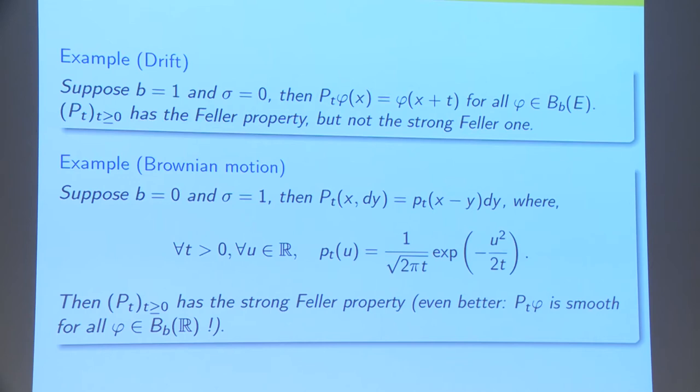Obviously, it's not Strong-Feller because it does not create any irregularity of the function. On the other hand, consider the case where B is 0 and σ is equal to 1, the case of Brownian motion. In that case, the semi-group is given by convolution by the heat kernel. This is a smooth kernel. So, P_T is not only Strong-Feller, but even better, P_T of φ will be smooth for any φ which is Borel, for any positive T.